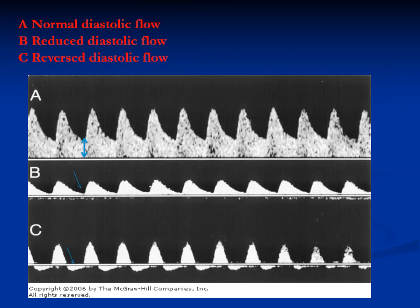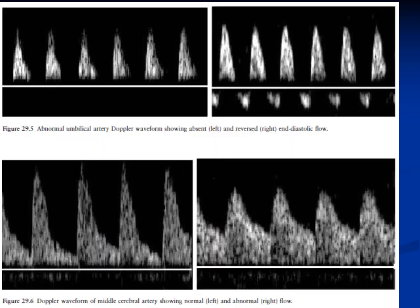Doppler study: normally blood flows to the fetus during both systole and diastole, so there should be diastolic flow even during diastole. Abnormalities include reduced diastolic flow and absent diastolic flow, where very little blood reaches the fetus during diastole, and reversed diastolic flow, indicating that placental resistance is so high that blood is directed back toward the mother during maternal diastole.